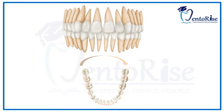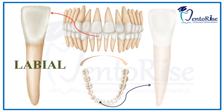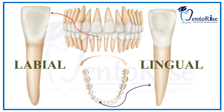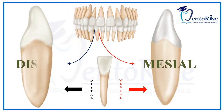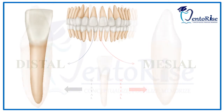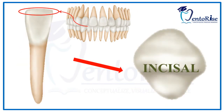Following the similar approach, we will be discussing the anatomy of a permanent mandibular lateral incisor under five headings: the labial aspect, the lingual aspect, the mesial aspect, the distal aspect, and the incisal aspect.